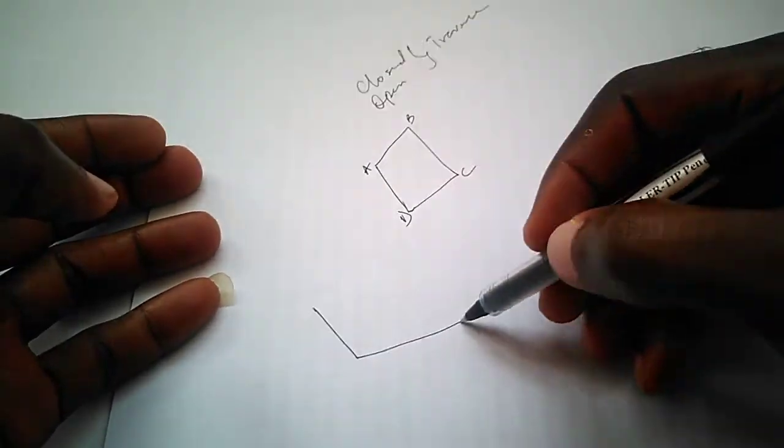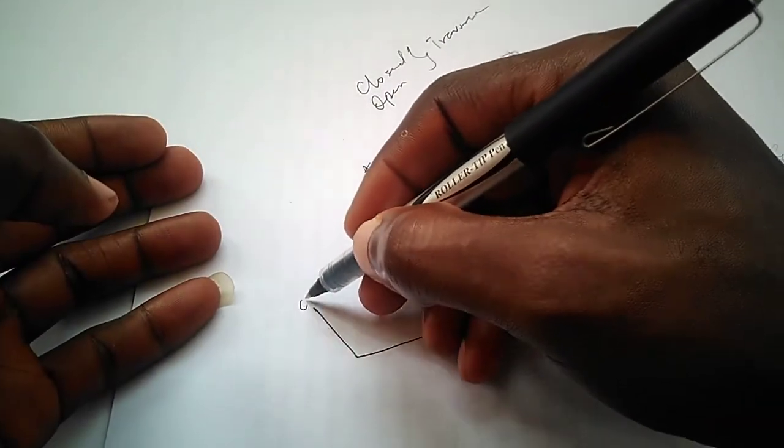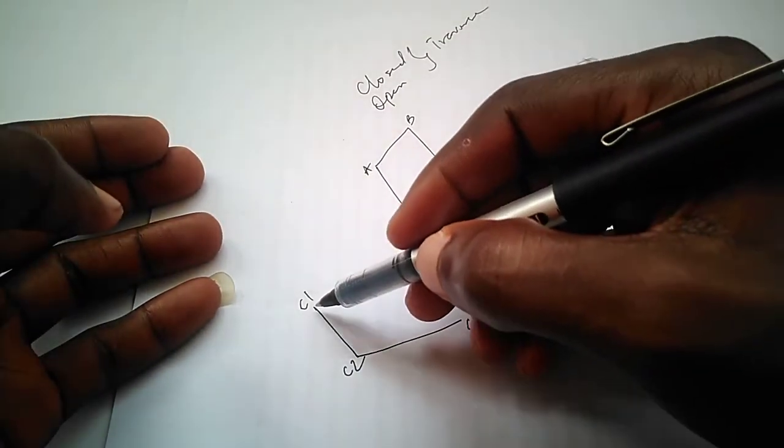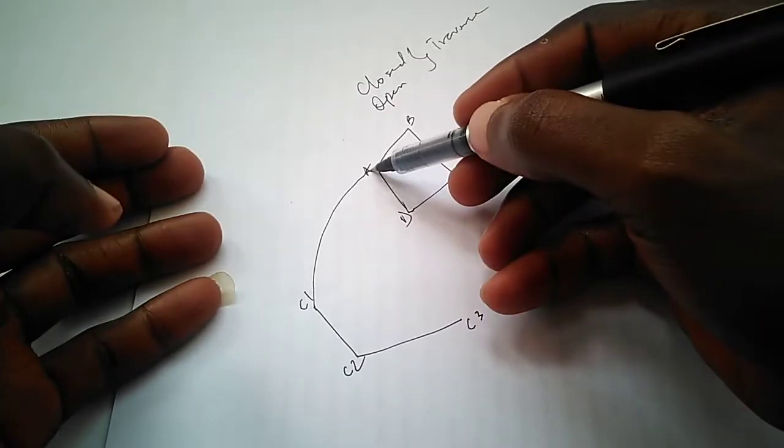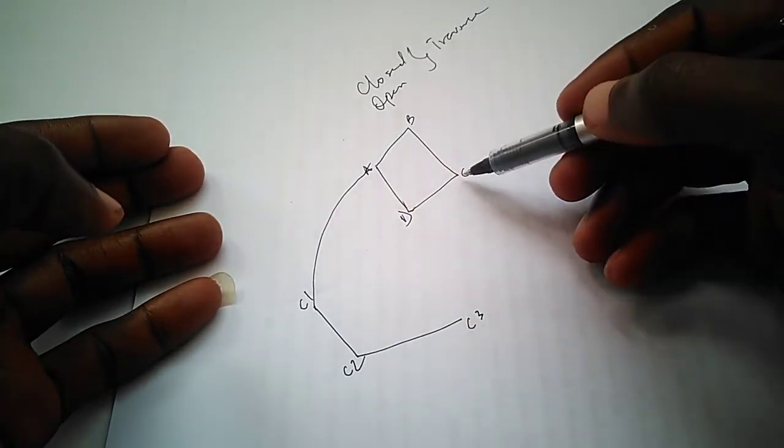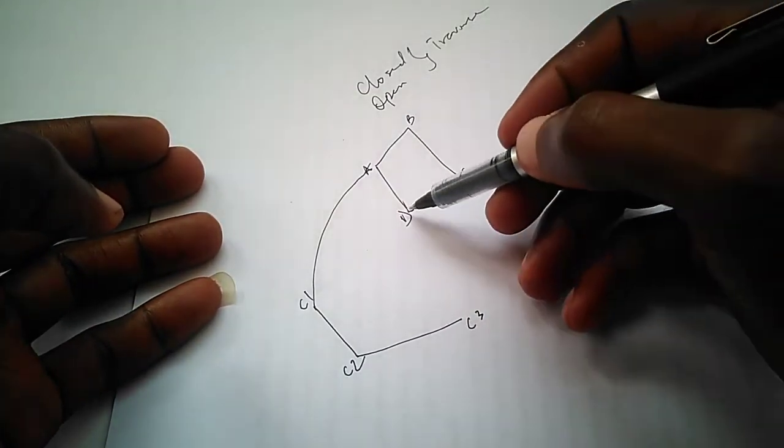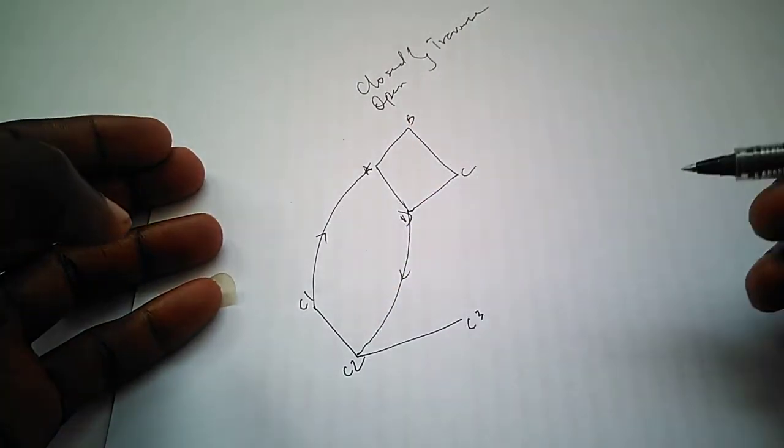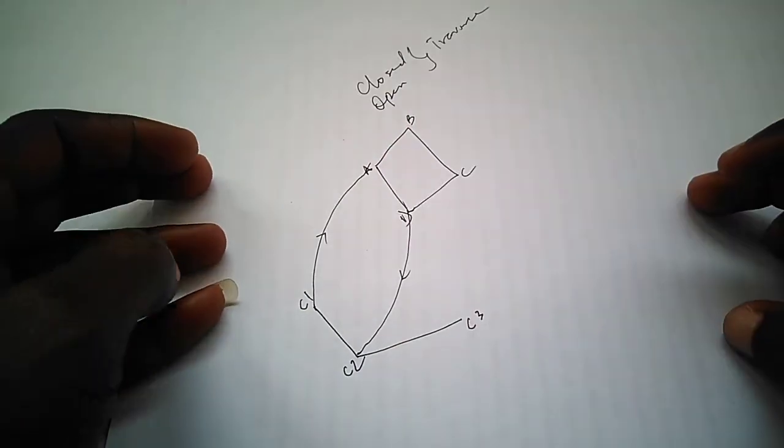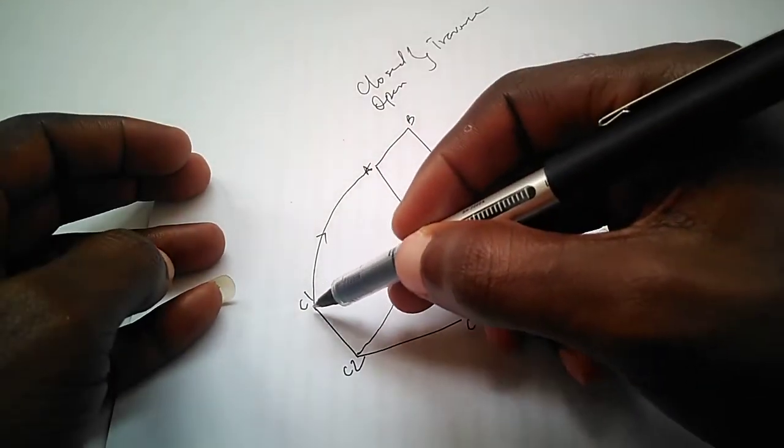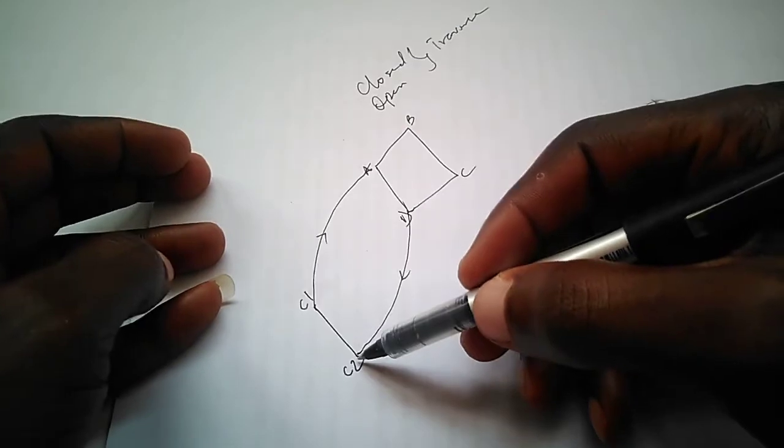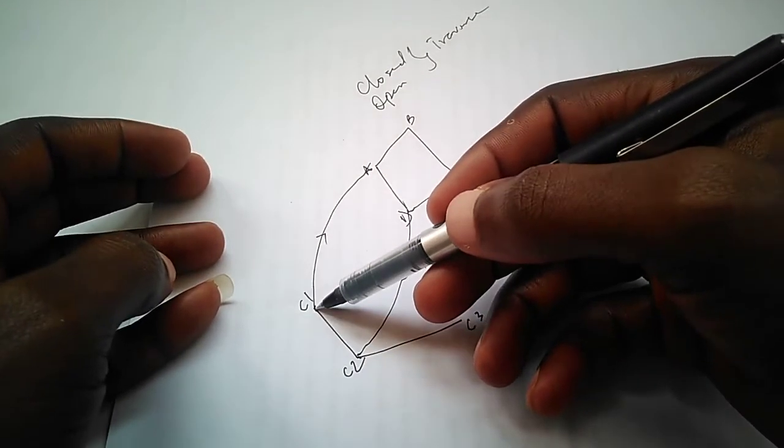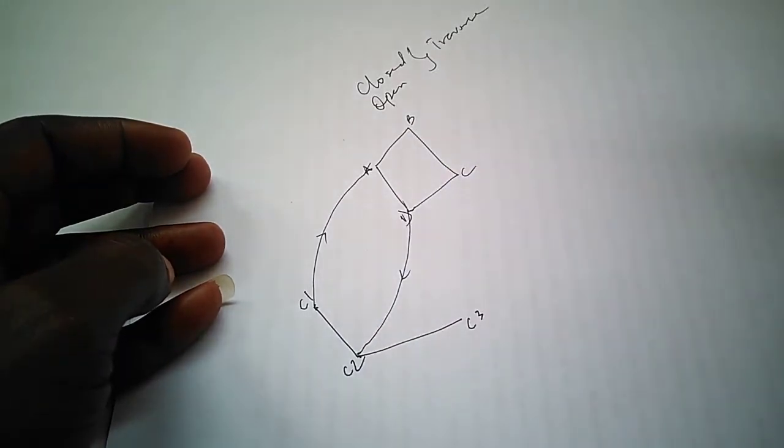Now, let's say we have a set of controls here: c1, c2 and c3. If the traverse starts from c1, goes to a, then a to b, b to c, c to d, and then from d it comes back to close at c2, this is a closed traverse because it started from a known point and closed on a known point. It can close on another known point or the same known point.